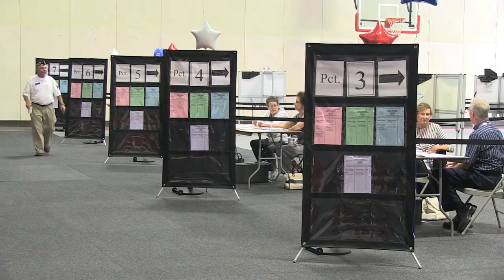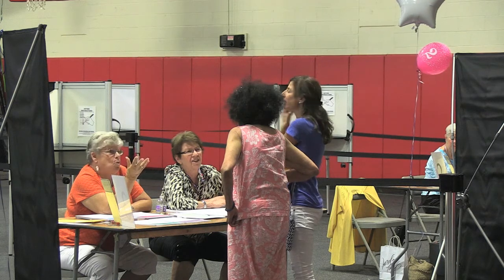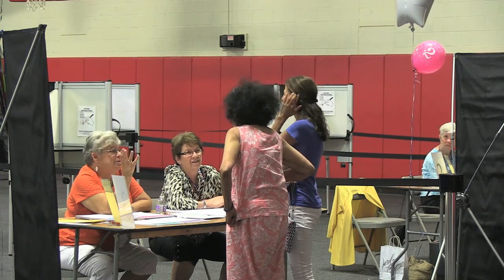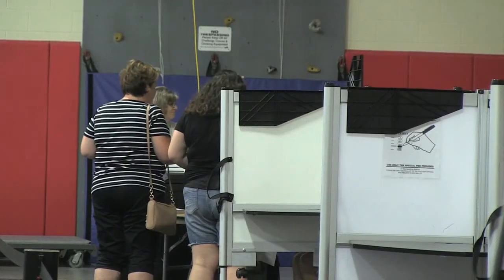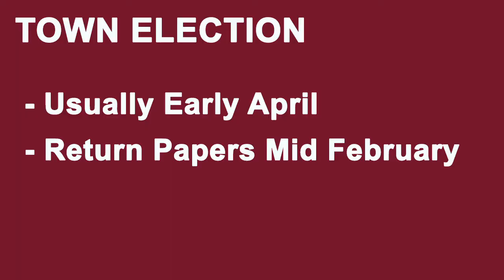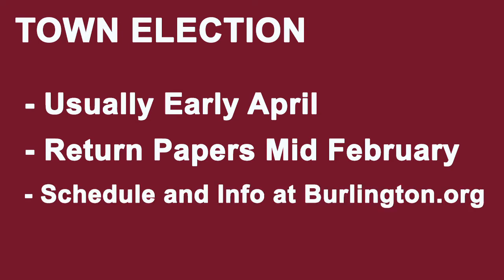The town elections are usually at the beginning of April, and the deadlines for being able to take out and return papers to get your name onto the ballot are approximately 45 days prior to that. If you need any more information, it's also on our website at burlington.org, or feel free to come down and visit the town clerk's office — we'll be very glad to help you with information about how you run for any of these positions.